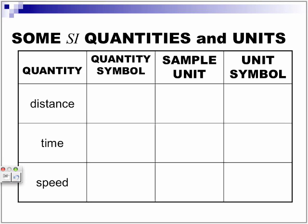Some SI quantities and units. So, if we are looking at distance, the quantity symbol is D. Examples of some units: millimeters, centimeters, meters, kilometers. And unit symbols for each one: MM, CM, M, and KM. For my American viewers, I am really sorry that I am using the metric system, but please bear with me.